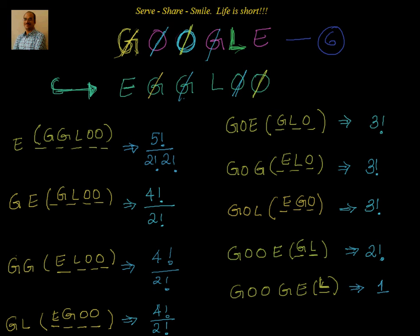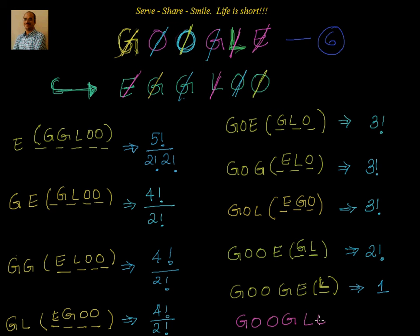And at the end, once you are done with G, O, O, G, E, you will move to L — you cancel L. Then once you strike off L, you start again from the first letter, and the first letter you see is E. So that is our word — that is G, O, O, G, L, E. And this is the last one — that is again one.